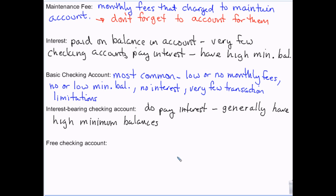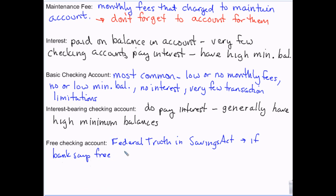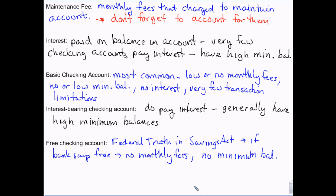Free checking accounts are protected by law under the Federal Truth and Savings Act. If the bank says the account is free, there can be no monthly fees. They can still charge fees for things like going overdraft — because that's a penalty for something you did — but they cannot charge a monthly fee. If they say the account is free, they have to follow this law or you can report them and they'll be penalized. So: no monthly fees, no minimum balance — that's the federal requirement.